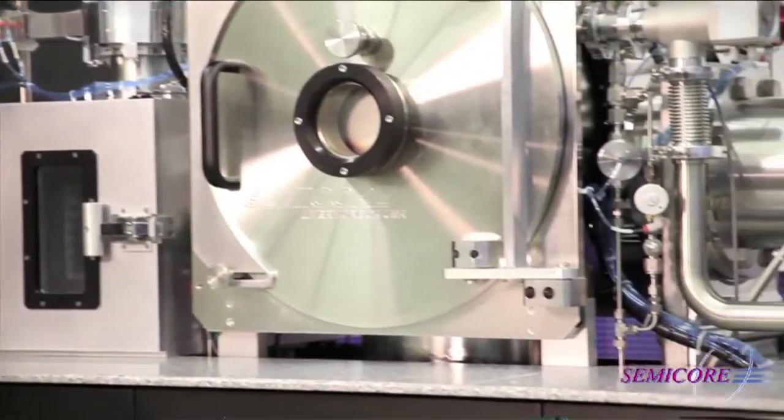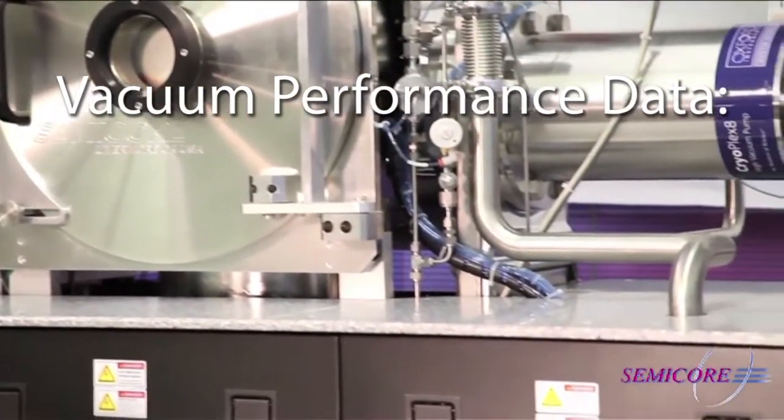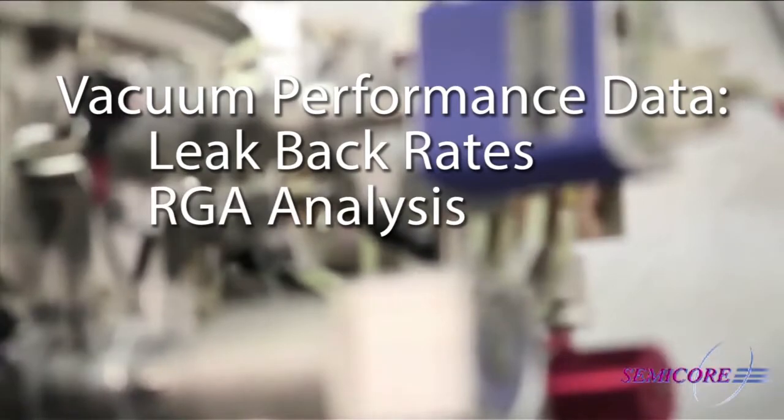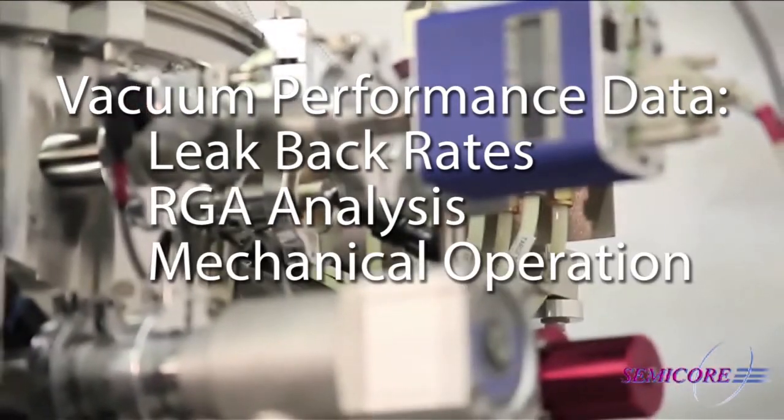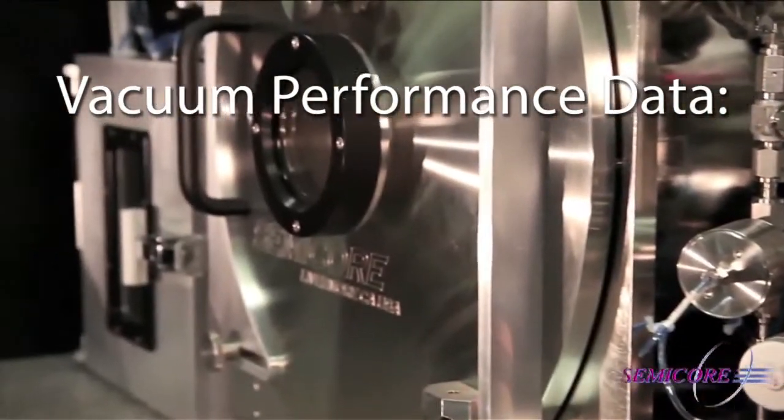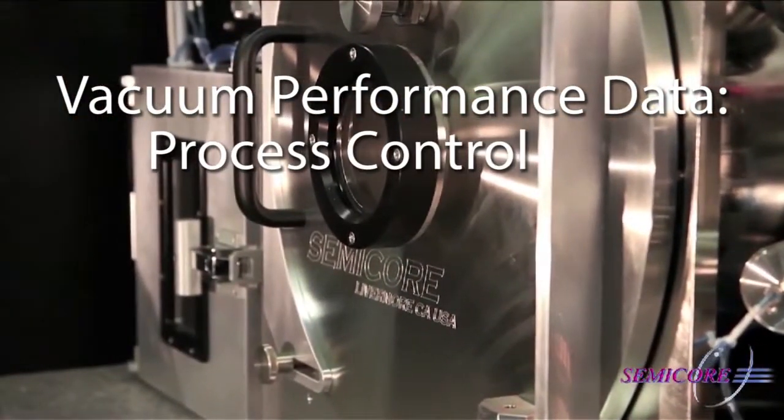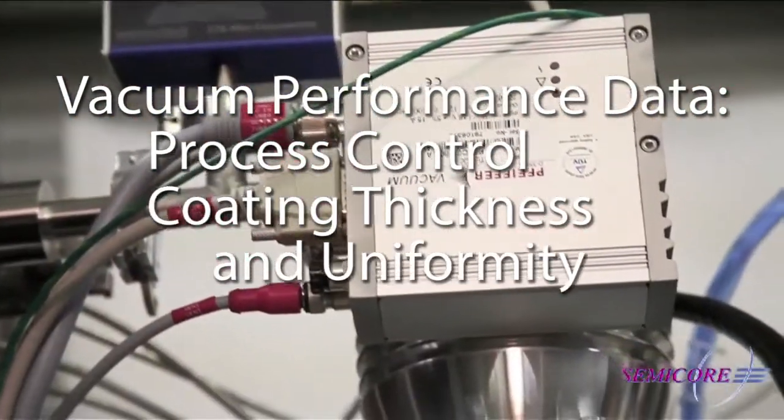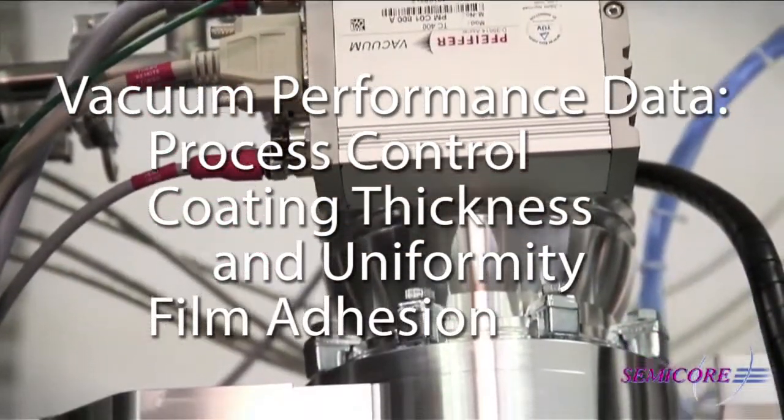This usually includes vacuum performance data, such as leak-back rates, RGA analysis, mechanical operation, and parts handling. Vacuum performance data can also include process control, coating thickness and uniformity, as well as film adhesion.